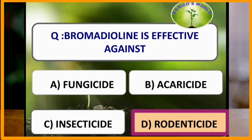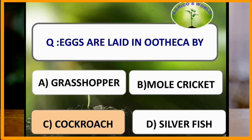Eggs are laid in ootheca by which insect? In cockroach, eggs are laid in ootheca. The ootheca of cockroach contains 16 eggs, 8 in each row.